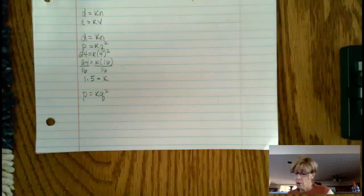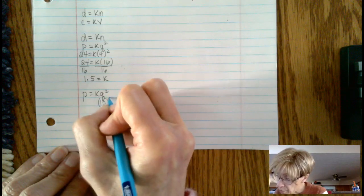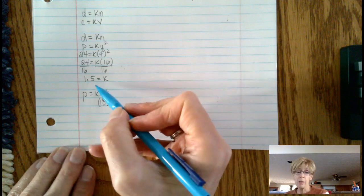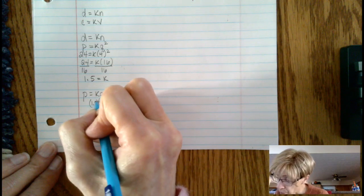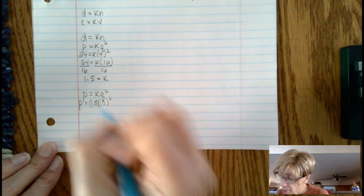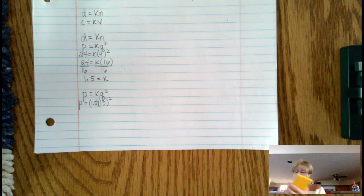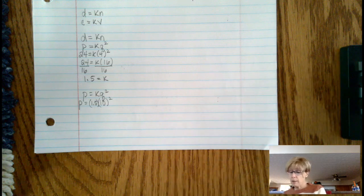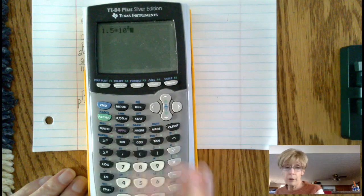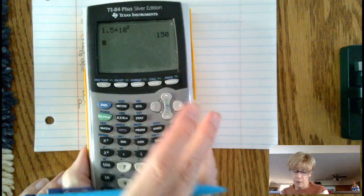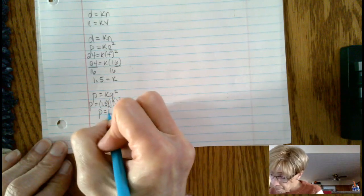Well now what we know is we know that q is 10, so this is going to be 10 squared. We're going to take the value of 1.5 and put that into the problem. So we get p equals 1.5 times 10 squared. We can type it in, 1.5 times 10 squared, and that gives us 150. So p equals 150.